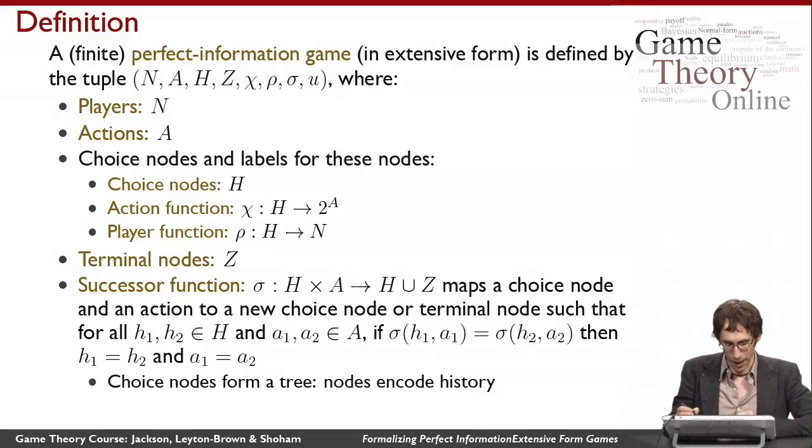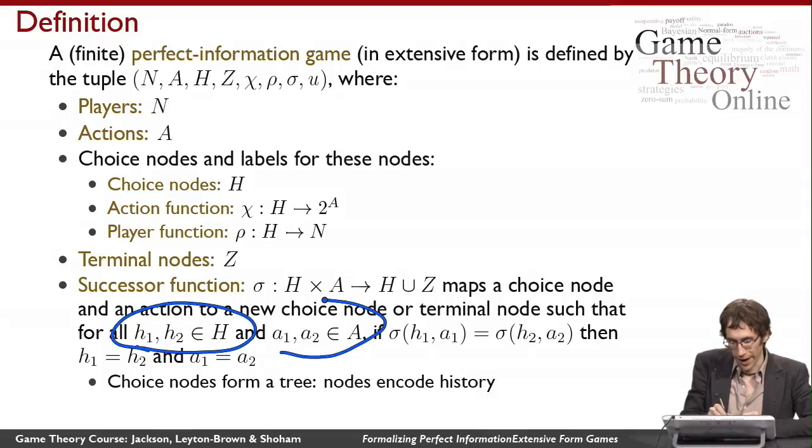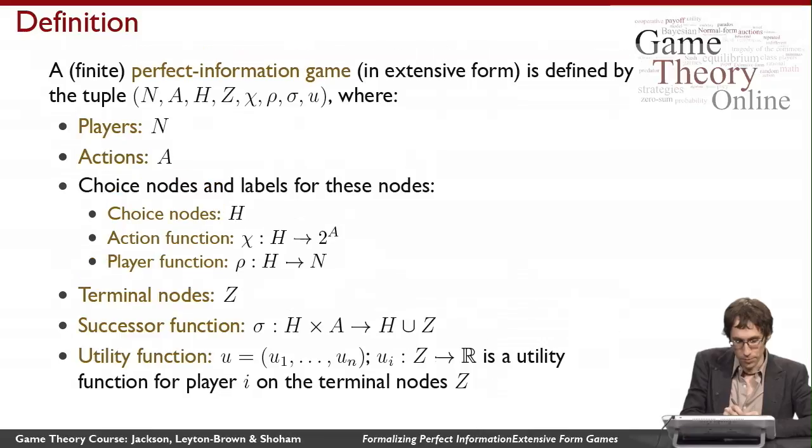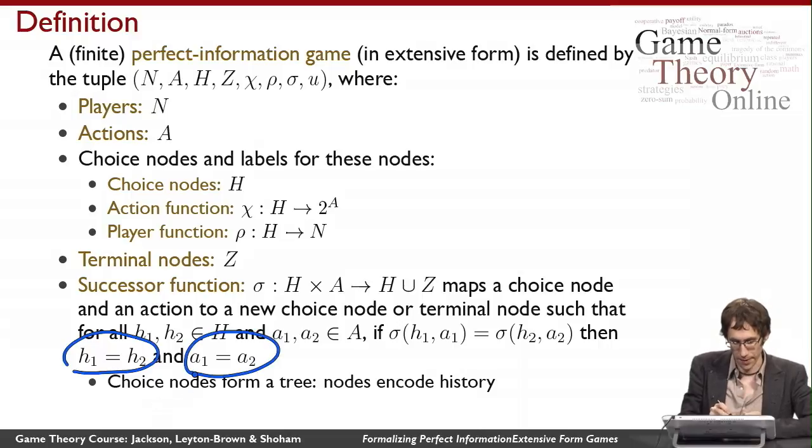In order for that to happen, we need to say there's only one way of getting to any given new node. Formally, for all pairs of choice nodes and actions, the only way the successor function is equal in both cases is if the two choice nodes were the same and the two actions were the same. This condition means the choice nodes form a tree.